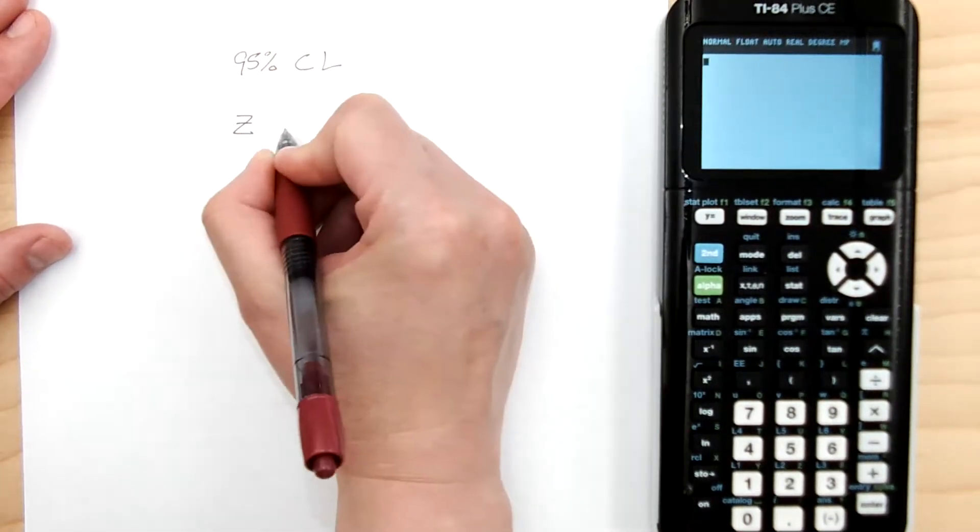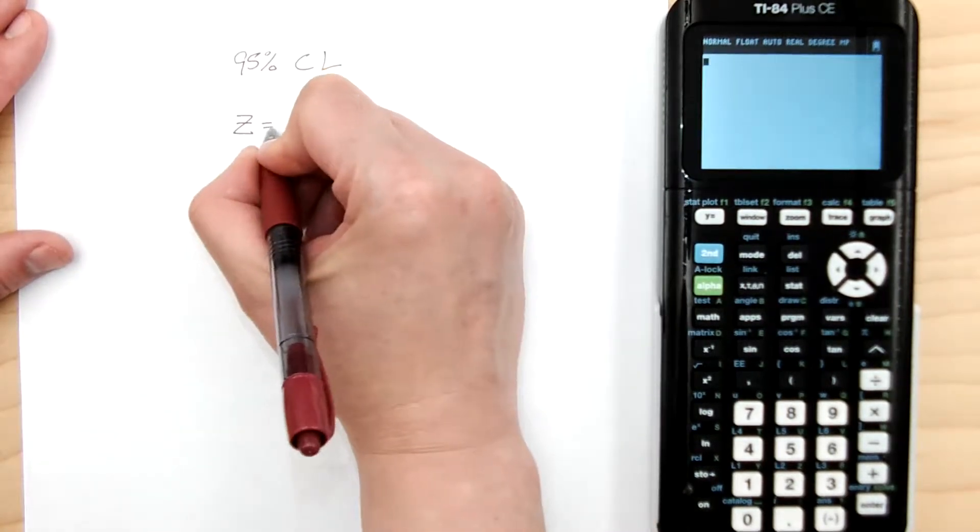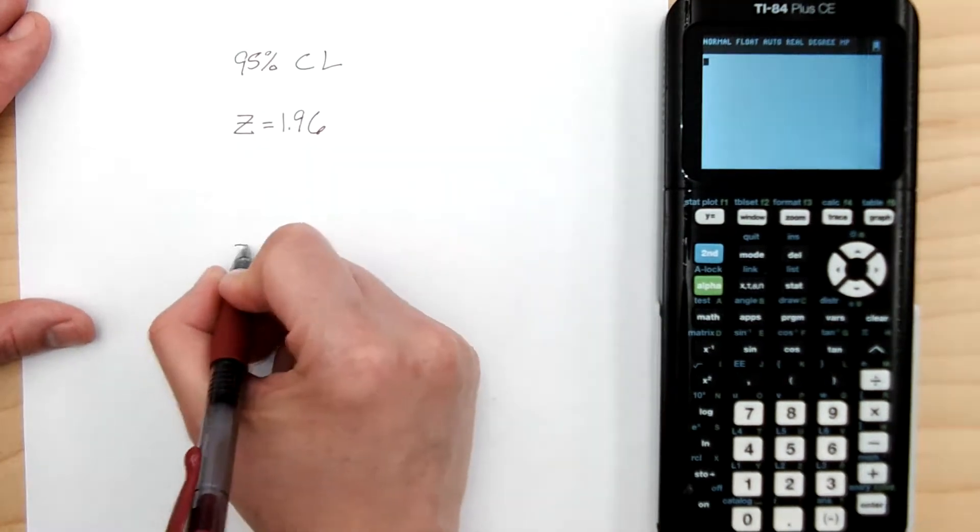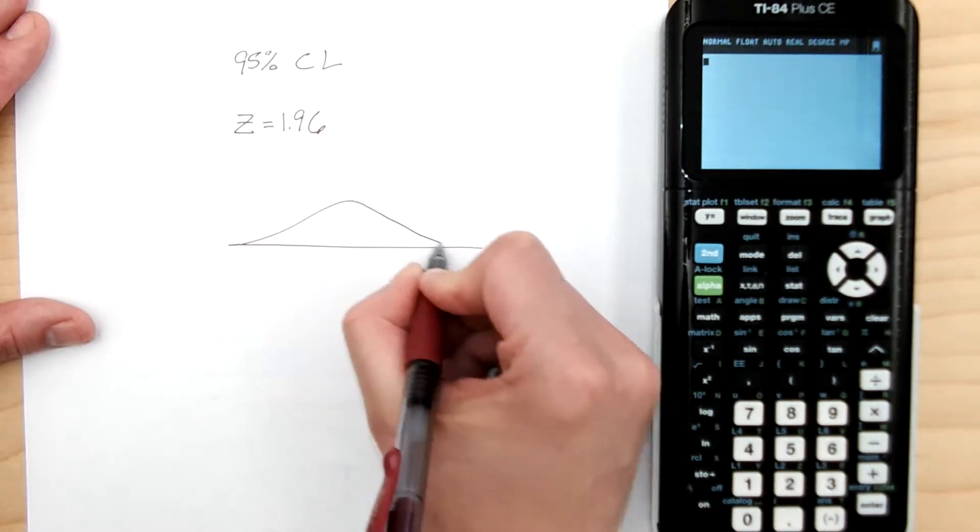I know for a z score, I can look it up in a table, and honestly, I know it should be 1.96. But that's just because I've done it a lot. So let's try it in our calculator.